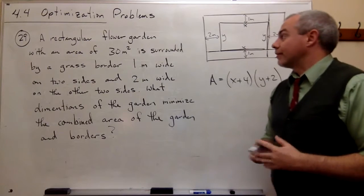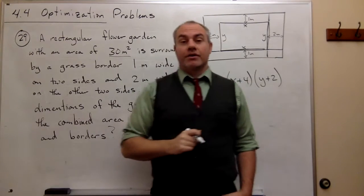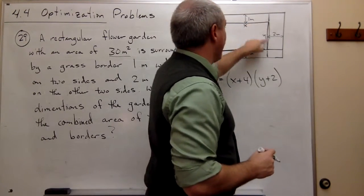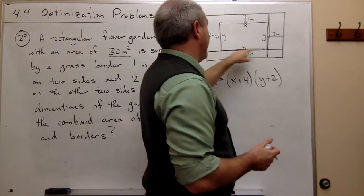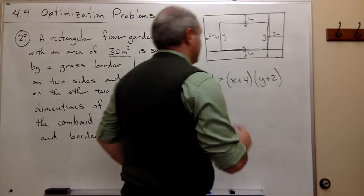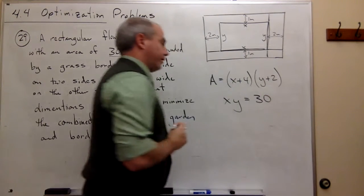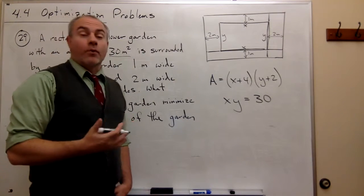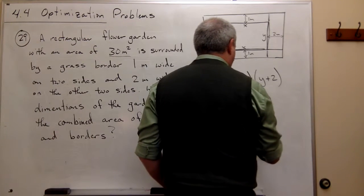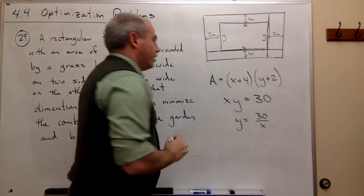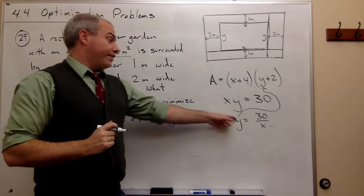Fortunately, we do have some extra information, and that is that the garden itself has an area of 30 meters squared. So if I just look at the area of this small rectangle, I know that that's 30. In other words, the length times the width of this little rectangle, or x times y, we know that that is 30. So I can solve for either x or for y and get this thing in terms of just one variable. So let's solve it for y. So I get y is equal to 30 divided by x. And now I can take this y and replace y up here with 30 over x.